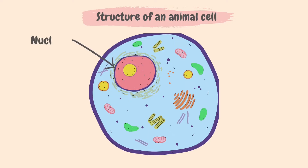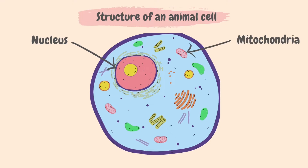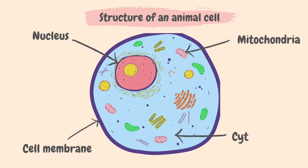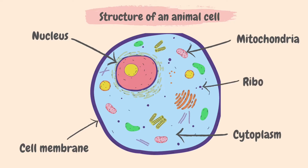This is the nucleus, or the control unit of a cell. The mitochondria is the powerhouse of the cell and it's where aerobic respiration takes place. The cell membrane controls what substances enter or leave the cell. The cytoplasm is a jelly-like substance in which all the cell organelles are present. And ribosomes are where proteins are made.